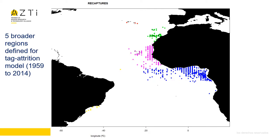Other areas had low numbers of recoveries and all were seemingly resident — those were the Azores and the areas in the northwest Atlantic. Based on these observed connections, we grouped these areas into five broader regions for a tag attrition model: Brazil, the Gulf of Guinea, West Africa, Canary Islands together with Madeira, and we added Azores, although with no movement involved in this case.